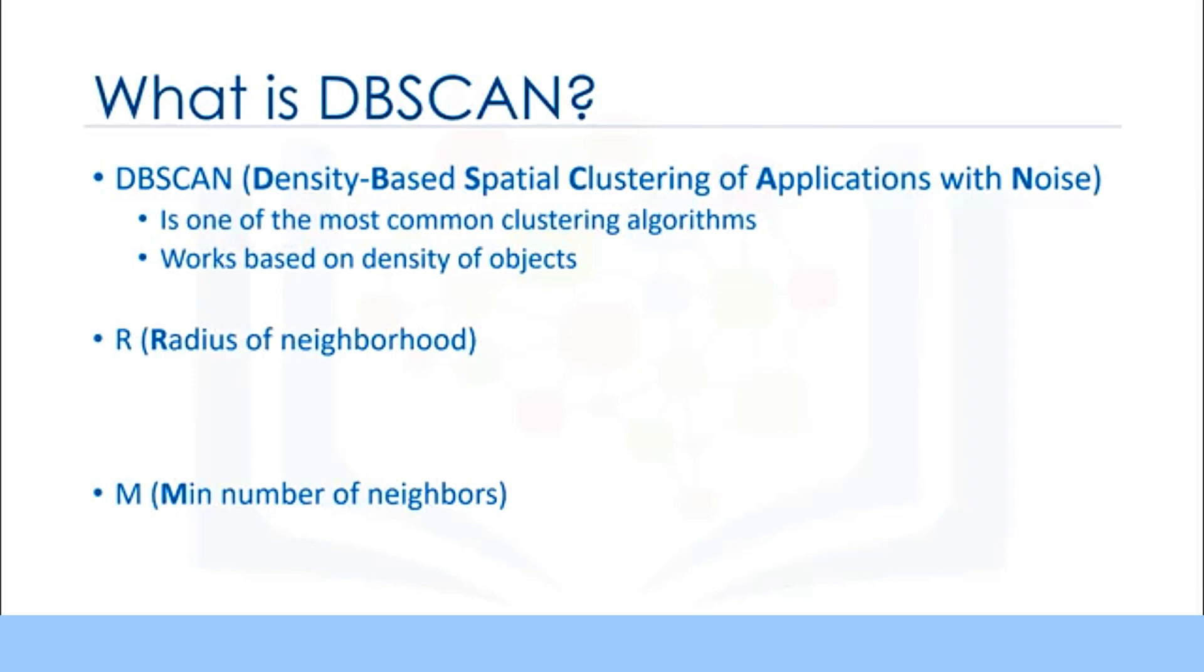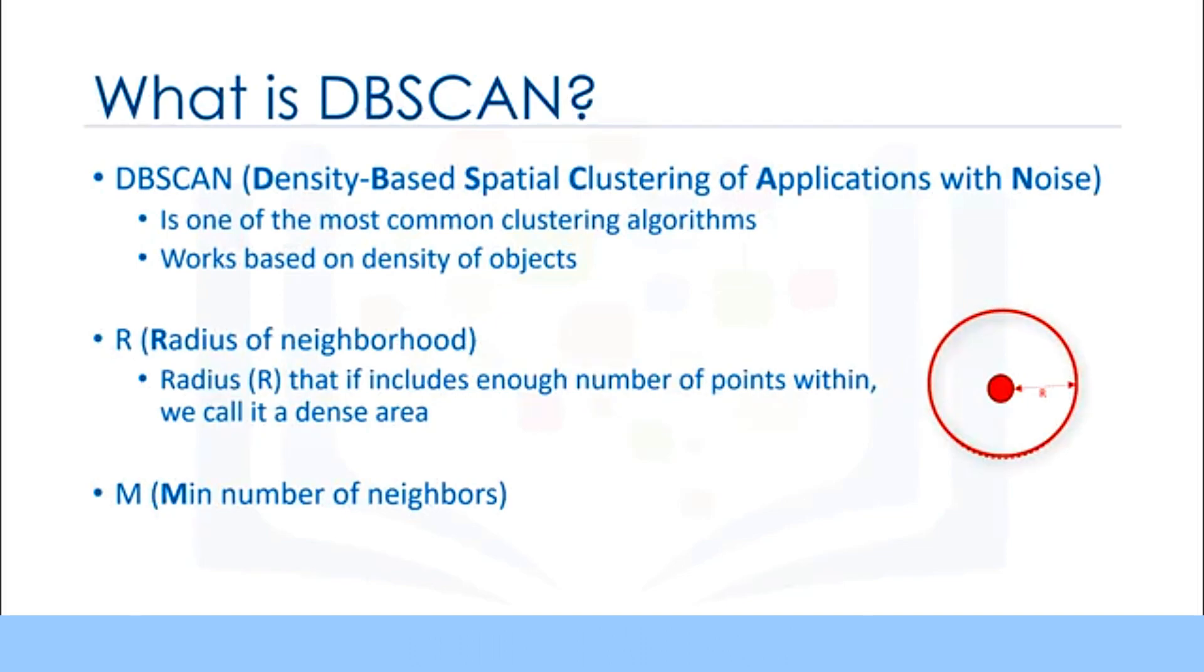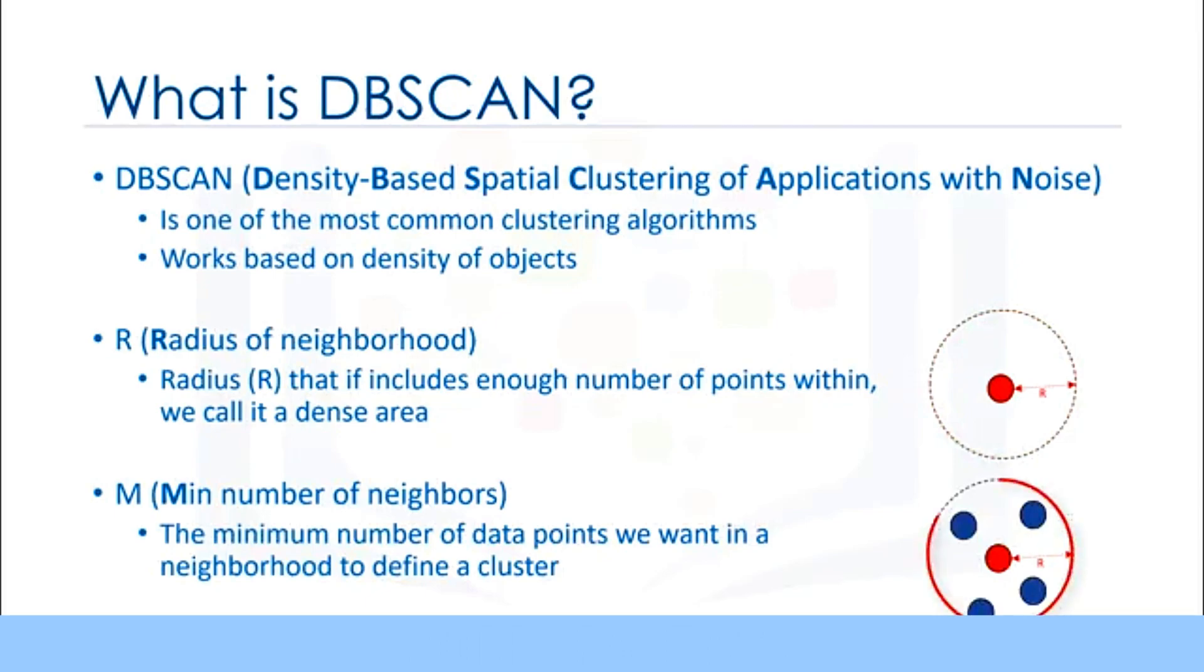It works based on two parameters: radius and minimum points. R determines a specified radius that, if it includes enough points within it, we call it a dense area. M determines the minimum number of data points we want in a neighborhood to define a cluster.